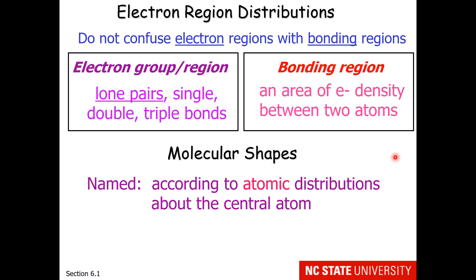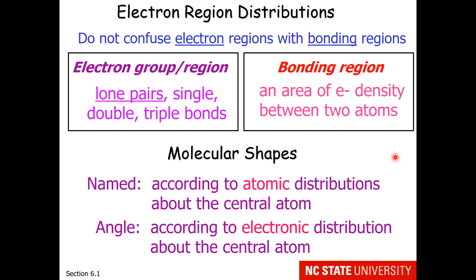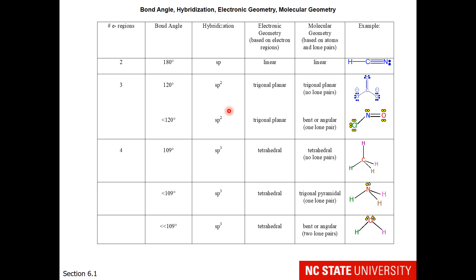The molecular shapes that we are going to cover are named according to atomic distributions about the central atom. I will explain further in a moment. The angle is according to the electron's distributions around the central atom. Here is a summary chart that is available in your class resources that students often find very helpful. Please don't worry about the hybridization column just yet. We are not ready. And the electronic geometry, while it is helpful in understanding the electrons orientation, is not the same as the molecular geometry, which is based on atoms and lone pairs.